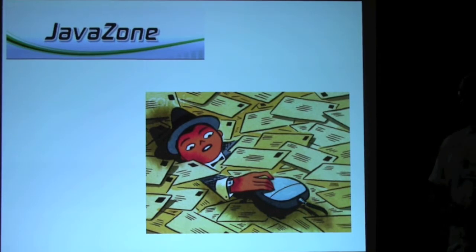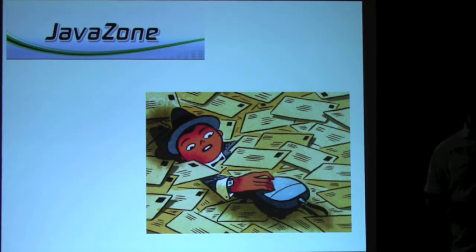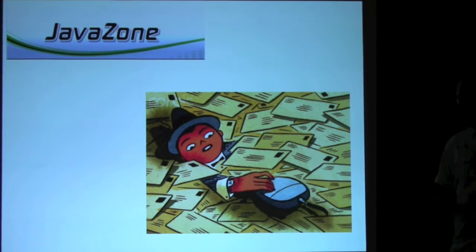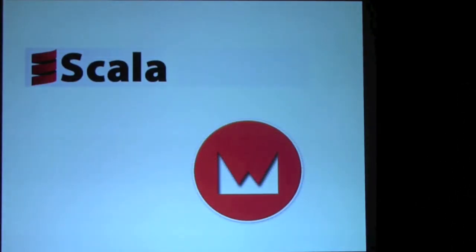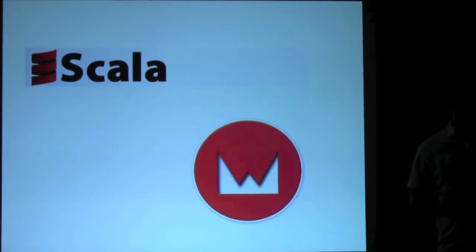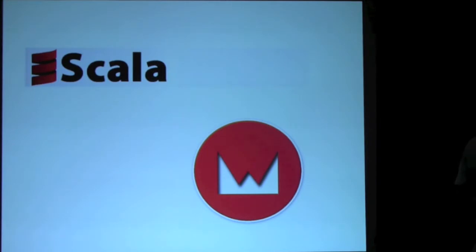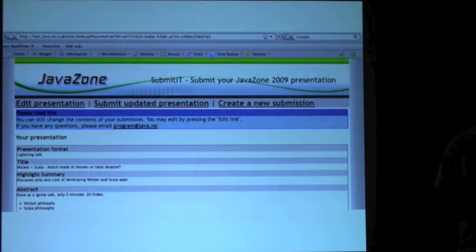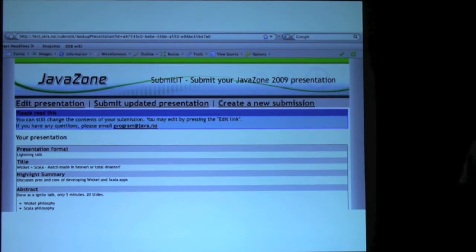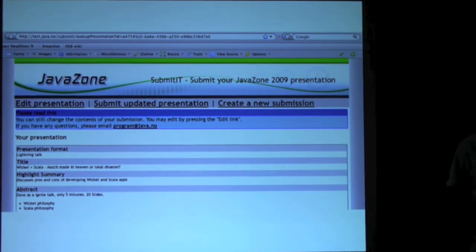We're on the program committee for JavaZone, which is a Java conference in Norway. Last year we were basically drowning in emails with submissions — a lot of manual work involved — so we figured there would be a better way to handle this. We've both been learning Scala for a while, and Alf had used Wicket previously, so we set out to create a simple web application to handle these submissions. This allowed users to submit and review their abstracts and update them, and all of this would be put into our existing backend system using REST.